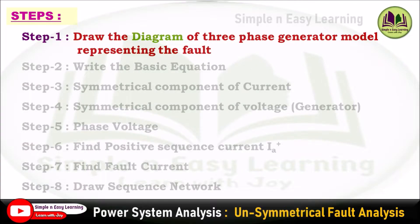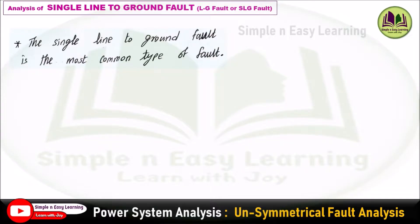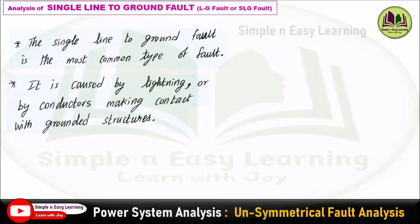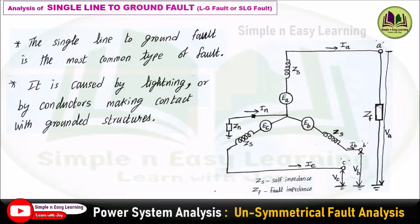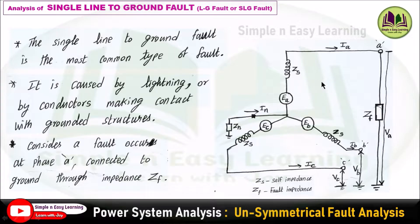Step 1 — draw the diagram of the three phase generator model representing the fault. A single line to ground fault is the most common type of fault; 70% of faults occurring in power systems are of this type, caused by lightning or conductors making contact with grounded structures. Consider a three phase generator model with induced EMF ea, self-impedance zs, neutral current, and neutral impedance. A fault occurs at phase a, which is connected to ground.